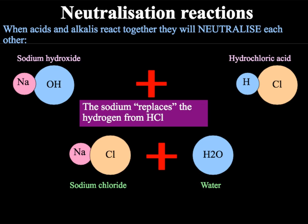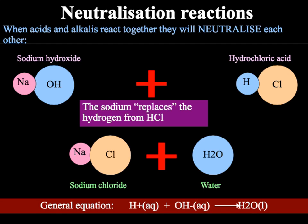When an acid and an alkali react together, they will neutralise each other. If we take hydrochloric acid and sodium hydroxide, they react together: the sodium replaces the hydrogen in the HCl, giving us NaCl — sodium chloride or common table salt — as well as water. It is this creation of water that makes it a neutralisation. So overall: H⁺ (aq) + OH⁻ (aq) → H₂O (l).